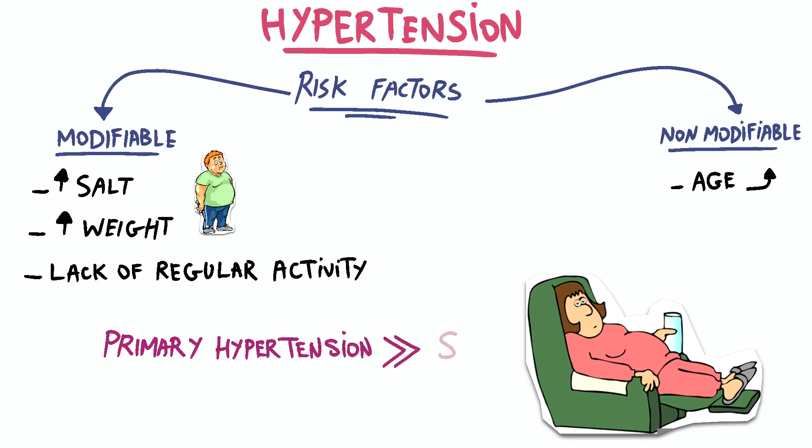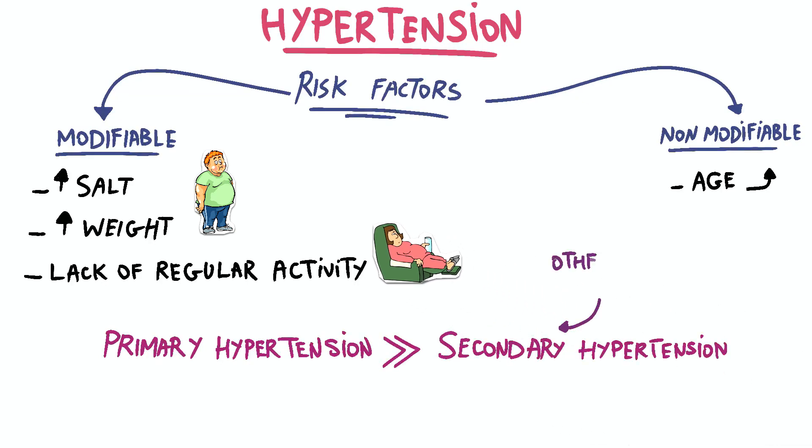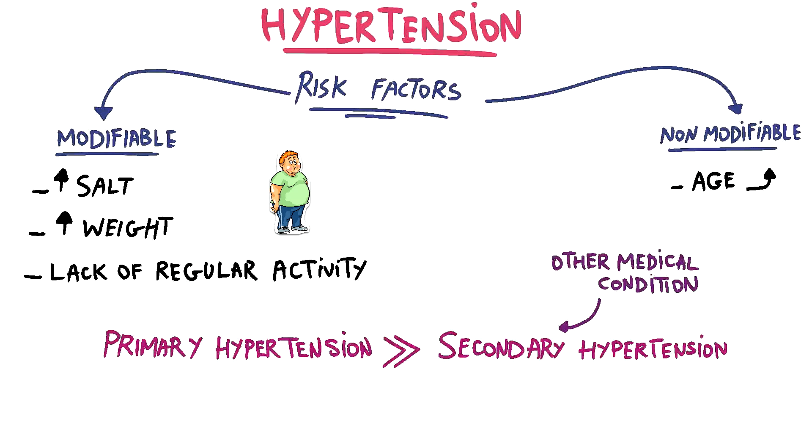Primary hypertension is more common, while secondary hypertension can be caused by other medical conditions and can benefit from a specific treatment.